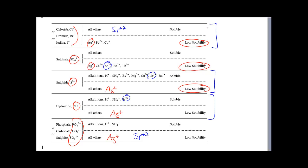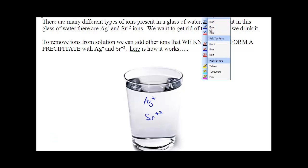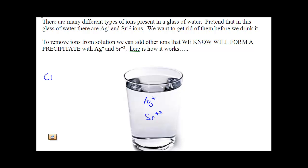It turns out the first row works, as well as other examples. If we add Cl, Br, or I, Ag will form a solid with it but Sr2+ won't. So let's go back to the example. I want to add an ion to remove Ag+, and I'm going to randomly pick Cl−. But I can't simply add Cl− by itself — I need to add Cl− in a compound, and it has to be a soluble compound. The first four or five rows of the solubility chart show us everything that's soluble. So I'm going to add NaCl.